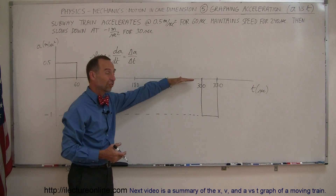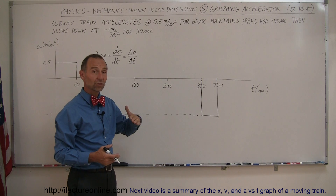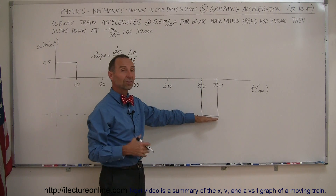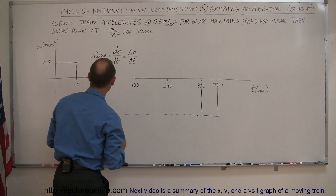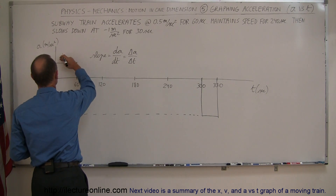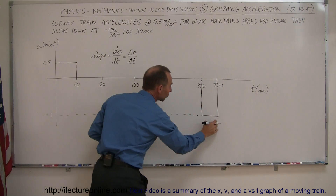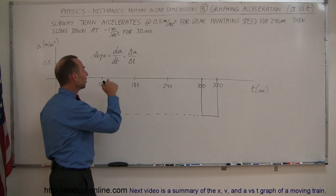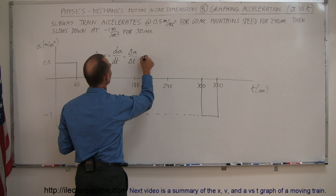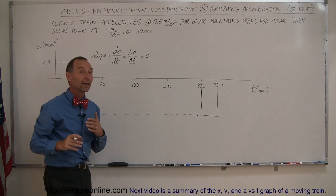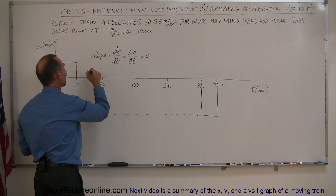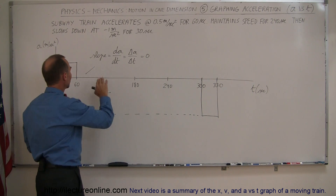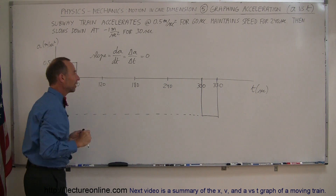Here the slope doesn't change, it's zero, meaning acceleration again doesn't change. And here the slope is also zero, so in each case the acceleration is constant: here it's 0.5, there it's 0, and there it's minus 1, but it's constant. The slope is equal to zero in this case. But if the slope were not flat, you could see that the acceleration would be changing — but in our example, we don't have that.